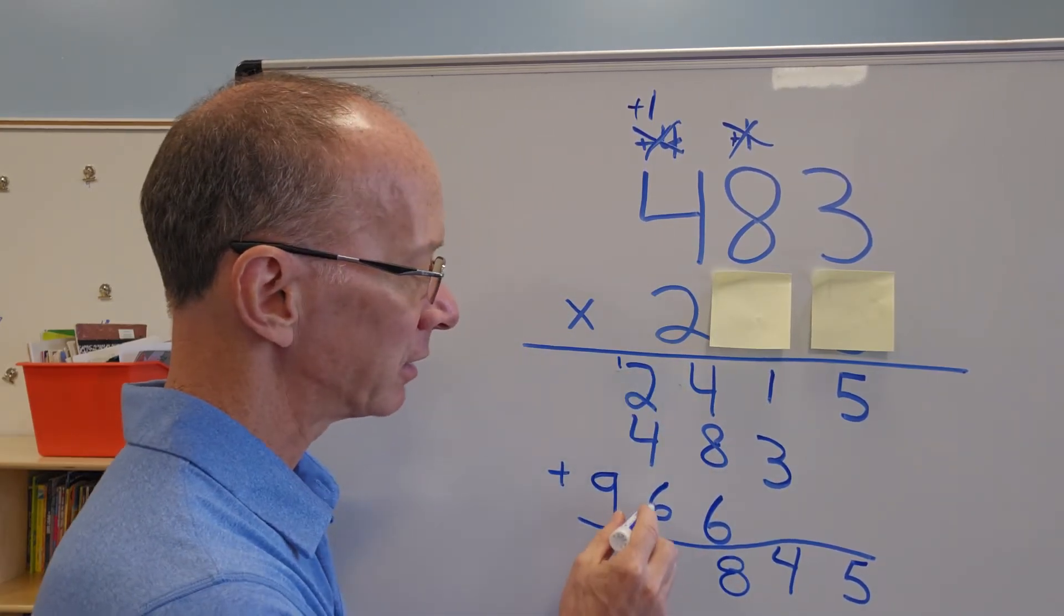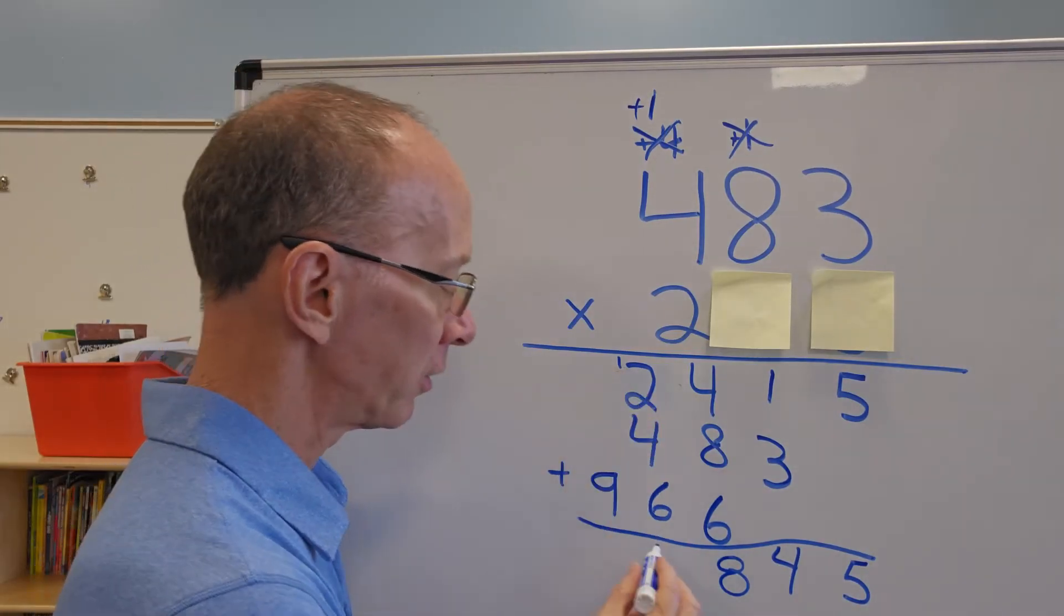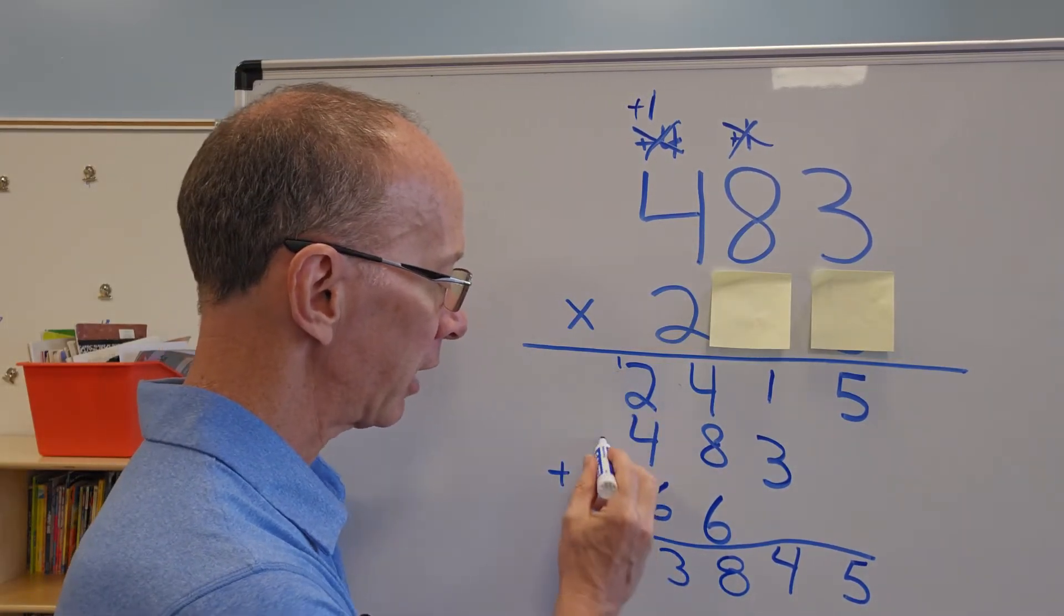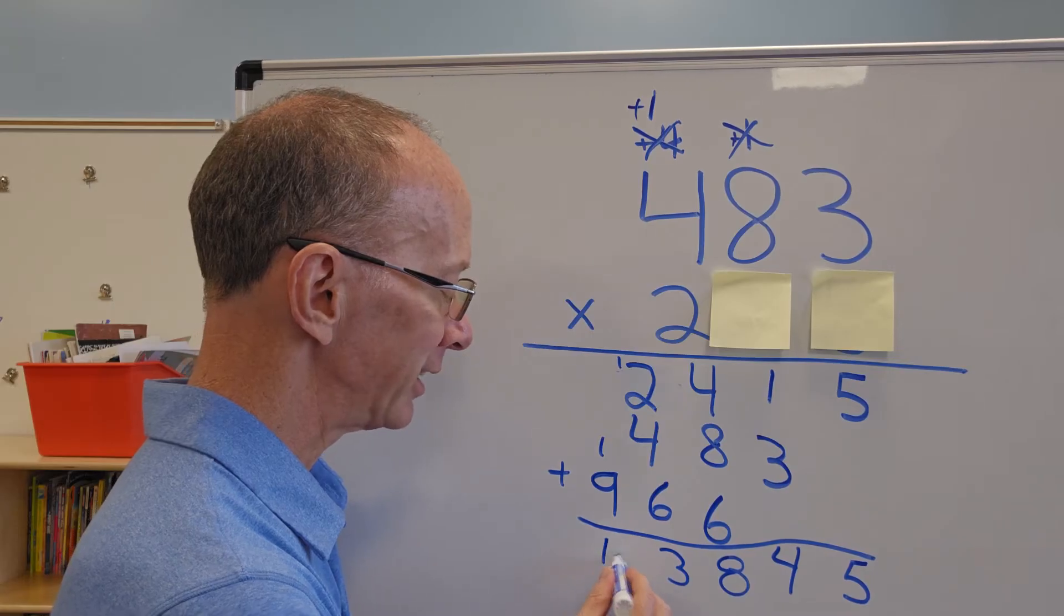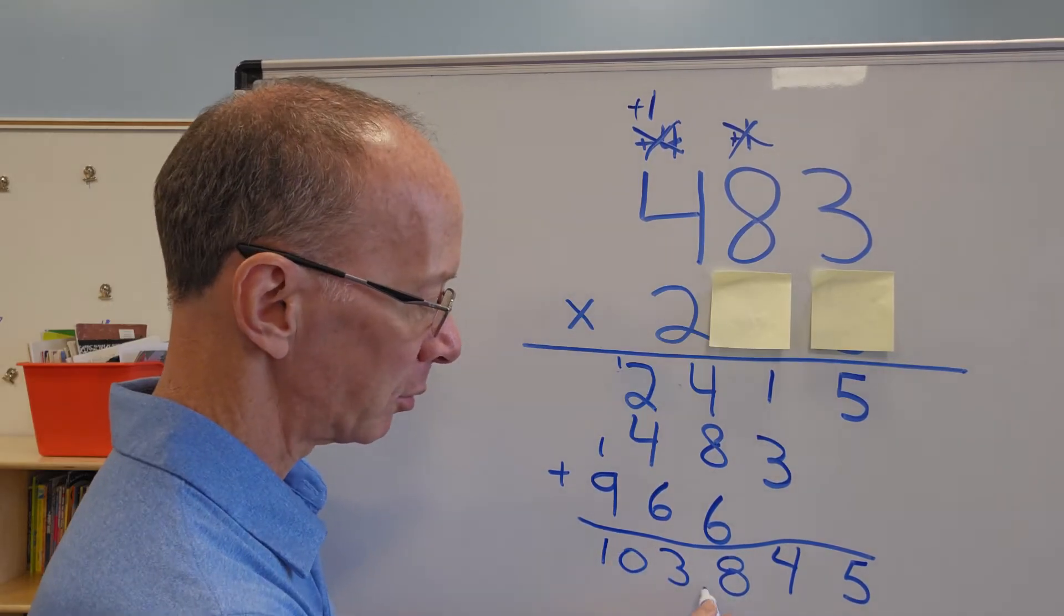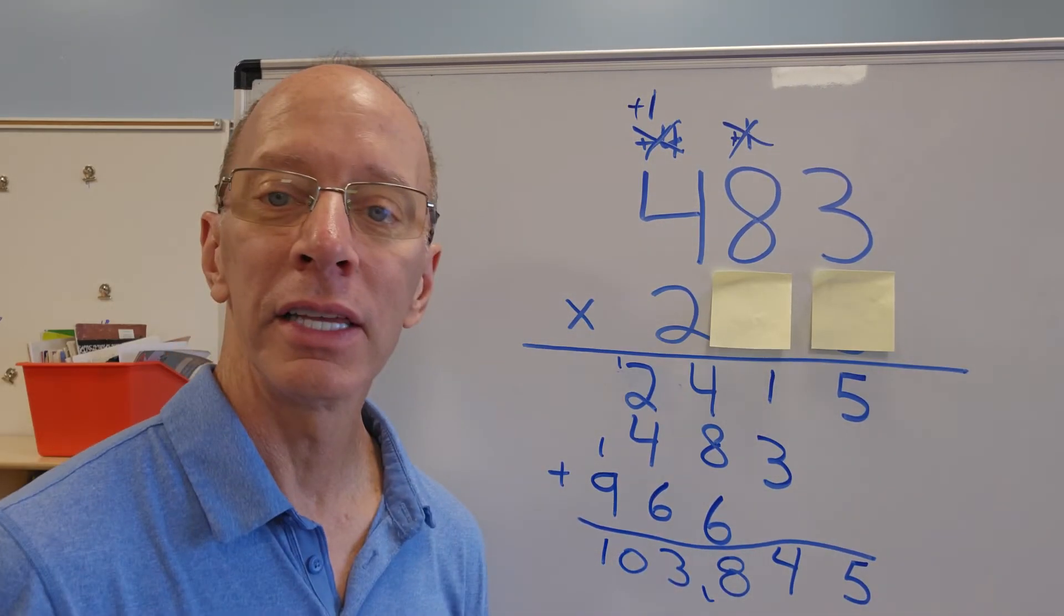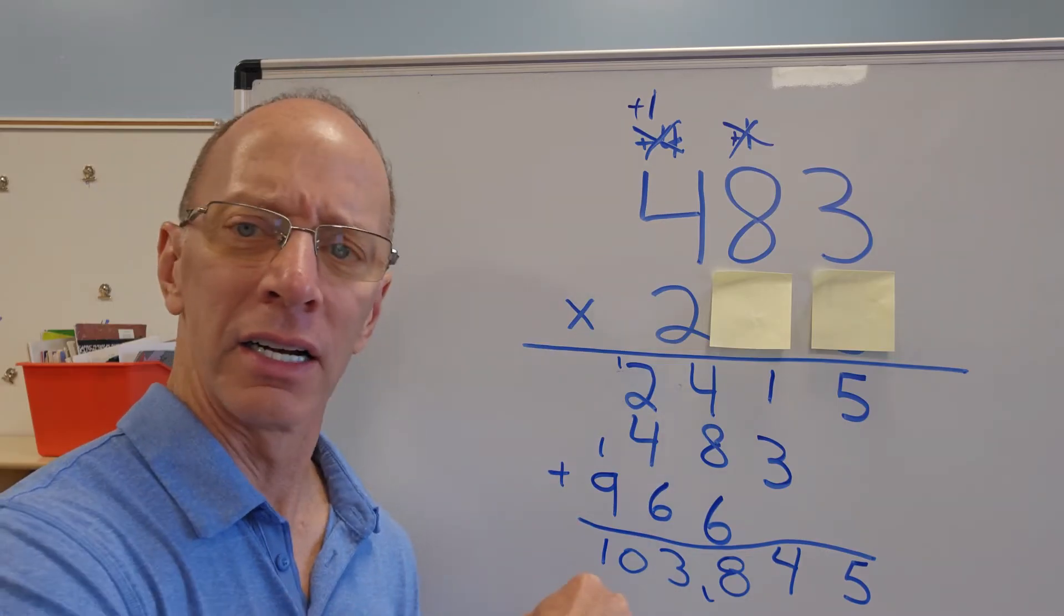And then I'm going to take six and four is 10, 11, 12, and then 13. So I put the three here, carry the one, nine plus one is 10 right there. So I'm going to put a little comma there to show you the answer. So I hope you can see that on the camera.